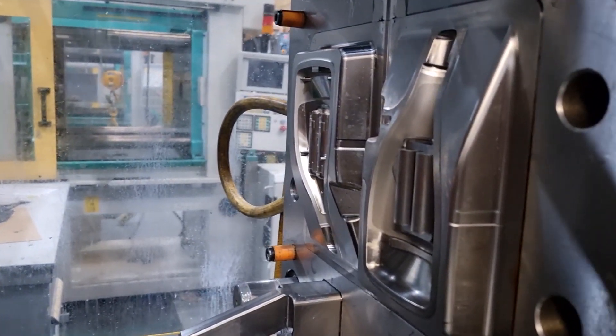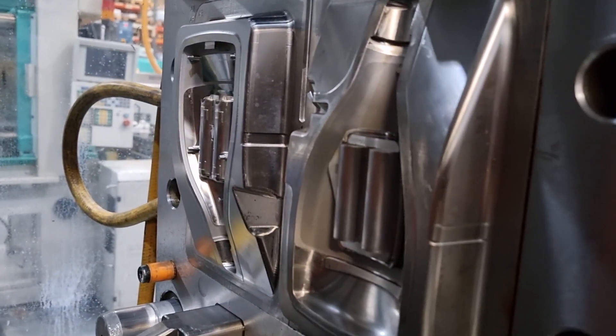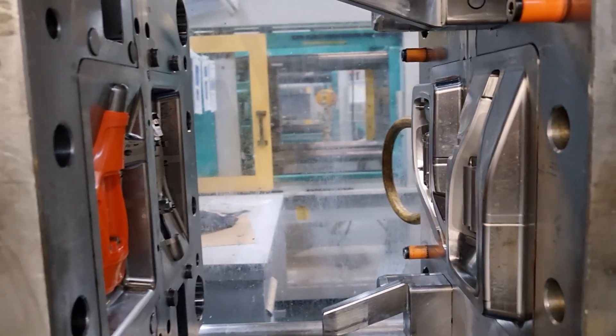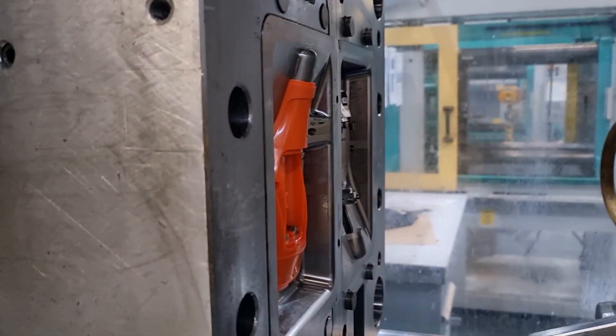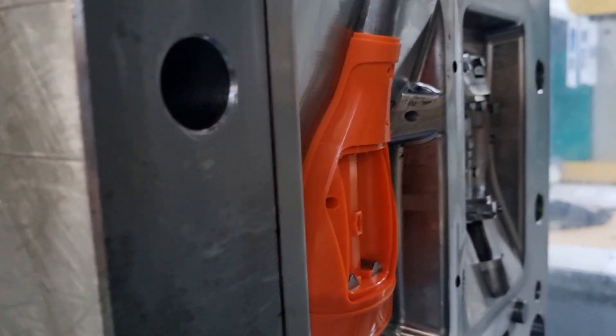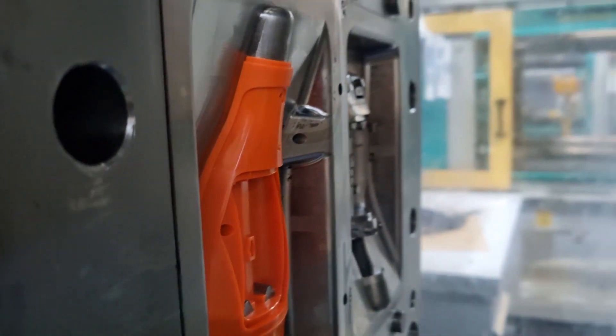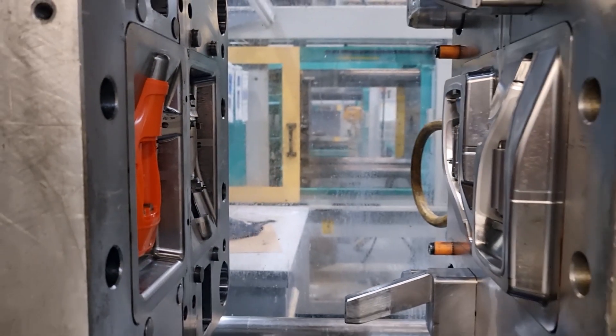The mold core and cavity are the shaped sections between both halves of the mold tool. They give the plastic product its final shape. The molten polymer is injected into the core and cavity, and then it cools until it holds its shape. The design of the core and cavity is essential to the correct formation of the product.